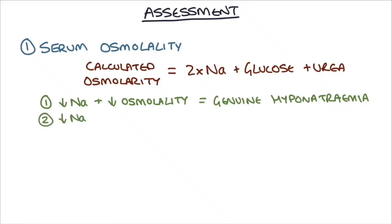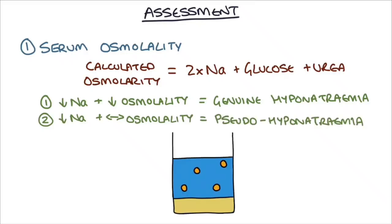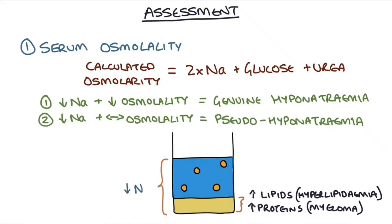If the patient has a low sodium but their osmolality is normal, we can call this pseudo-hyponatremia. This is where a high level of lipids, such as in hyperlipidemia, or proteins, such as in myeloma, take up a higher proportion of the blood volume and make the blood analyzer think that there's a low sodium. When in fact, if you separate the lipids or proteins away from the plasma, the sodium concentration would be normal.